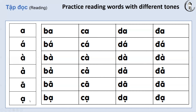Last but not least, letter A with dấu nặng. This tone makes the word sound shorter and low. Ạ. Bạ. Cạ. Giạ. Đạ.